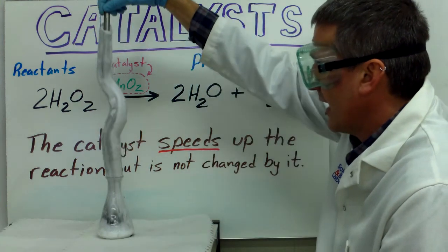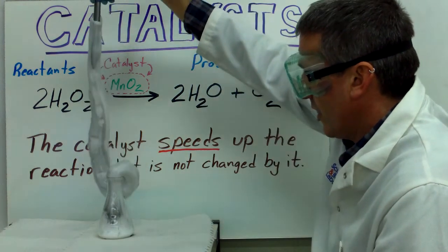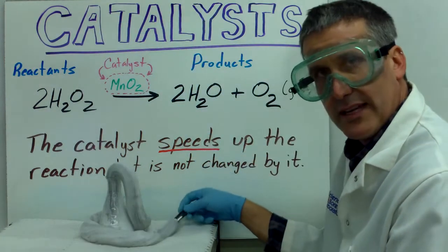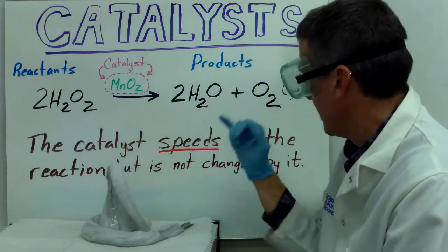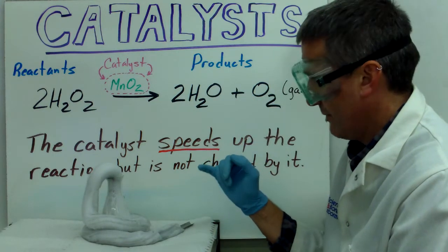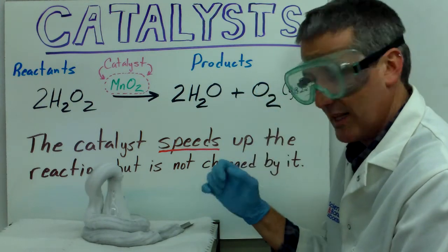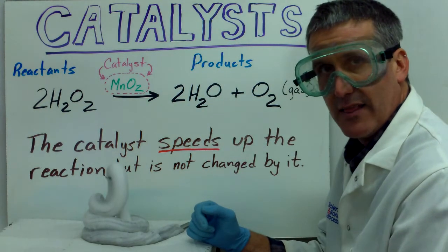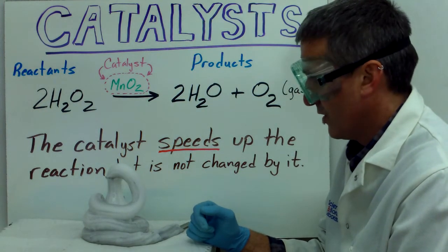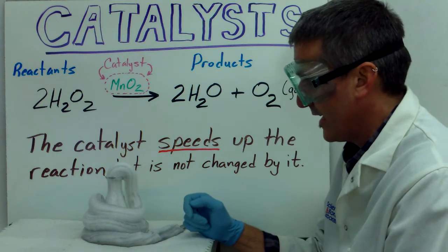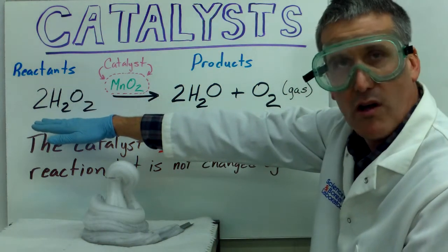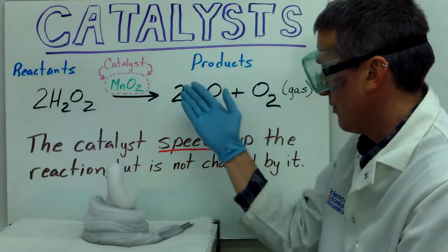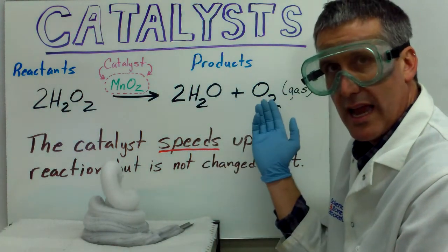And you'll see that the reaction rate is dramatically increased. We see that because the amount of bubbles being made by the oxygen gas being released dramatically increased as soon as I added the catalyst to the Erlenmeyer flask. And you'll see it continues to react, and it will continue to react until all the hydrogen peroxide has been turned into the products, which are water and oxygen.